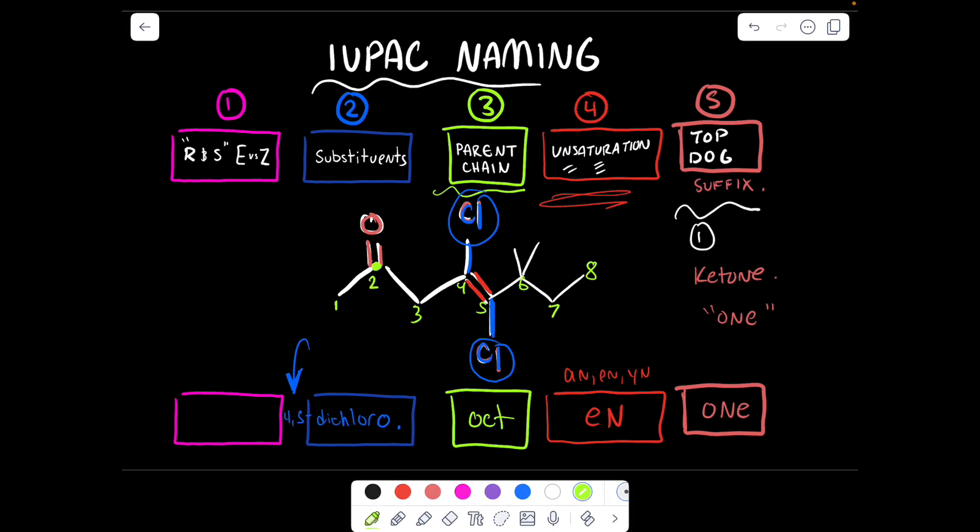We also have two methyl groups. These methyl groups also need to go in the substituent box. They're both on six, so we would say 6,6-dimethyl. And now we would put the methyl second, because M comes after C. We always put our substituents in alphabetical order. The 'di' does not count - we base it on the functional group name. So chloro and then methyl comes next.